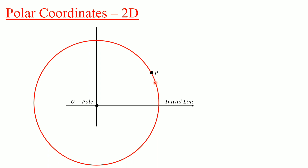We know that point P lies on this circle. The circle has some radius R, where this vector is called the radius vector or position vector of point P. So point P is at a distance R from the pole.